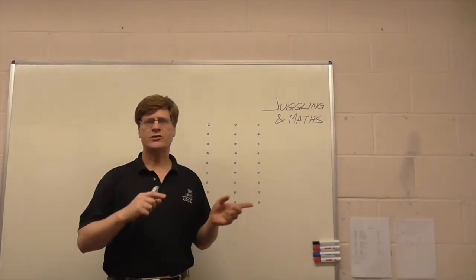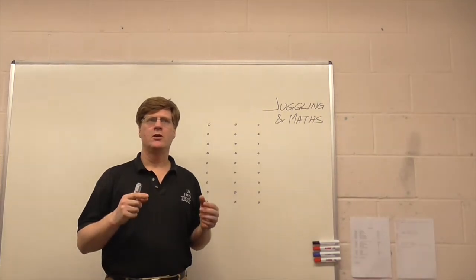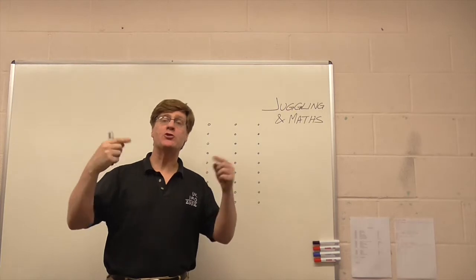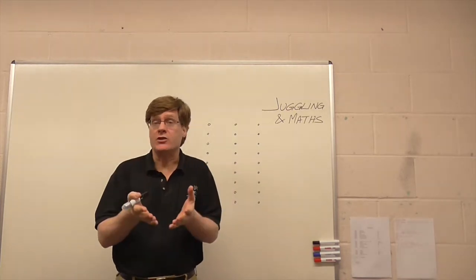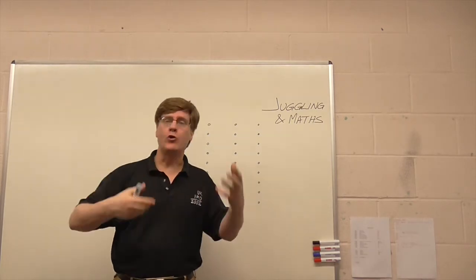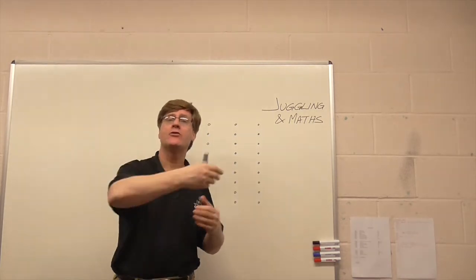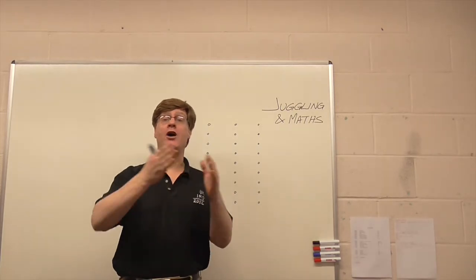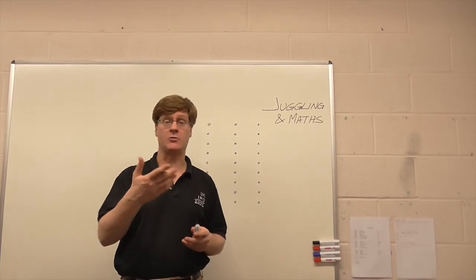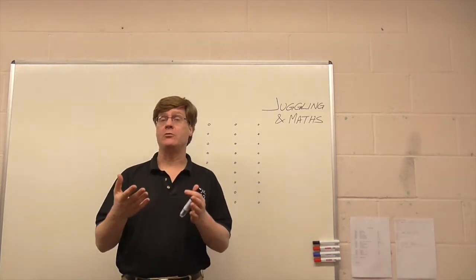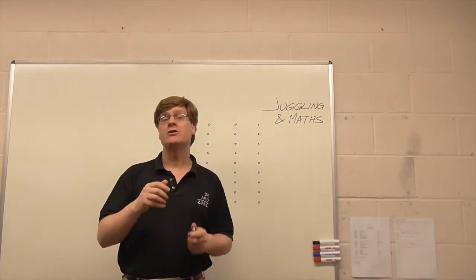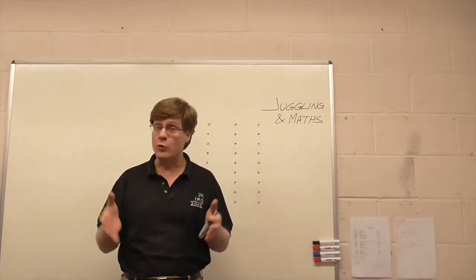Hi there. In the last video we saw how a juggling sequence where we swap two balls in the air can be represented by a sequence of numbers. Juggling four balls, we can throw one higher and one lower, represented by a five and a three. If you've had a go at some of the challenges, you may have been able to find other sequences — in particular, sequences of numbers for three-ball juggling tricks.